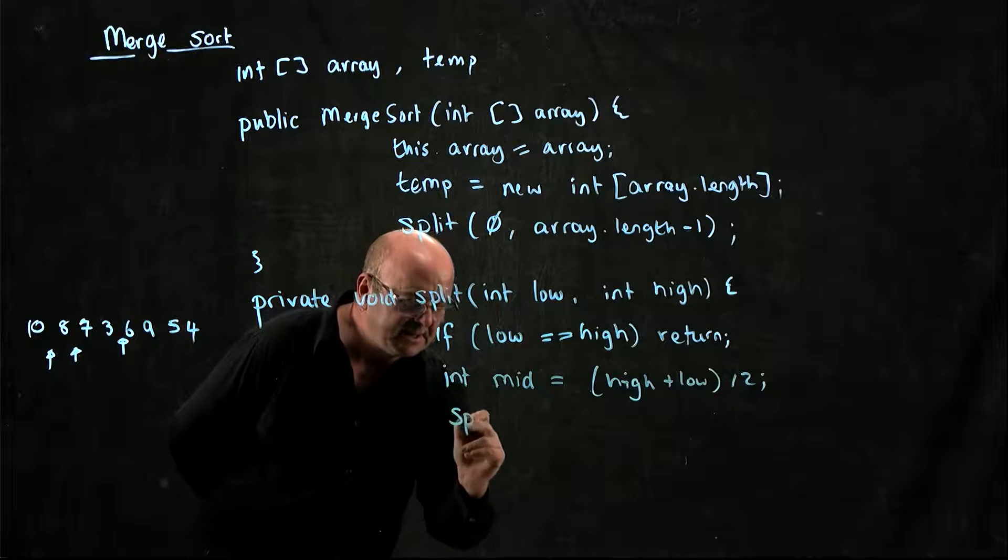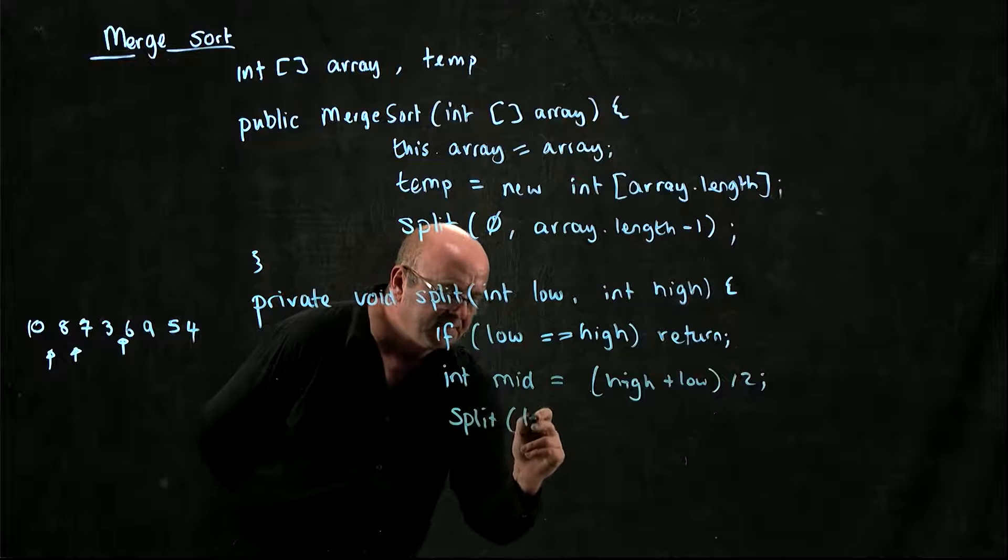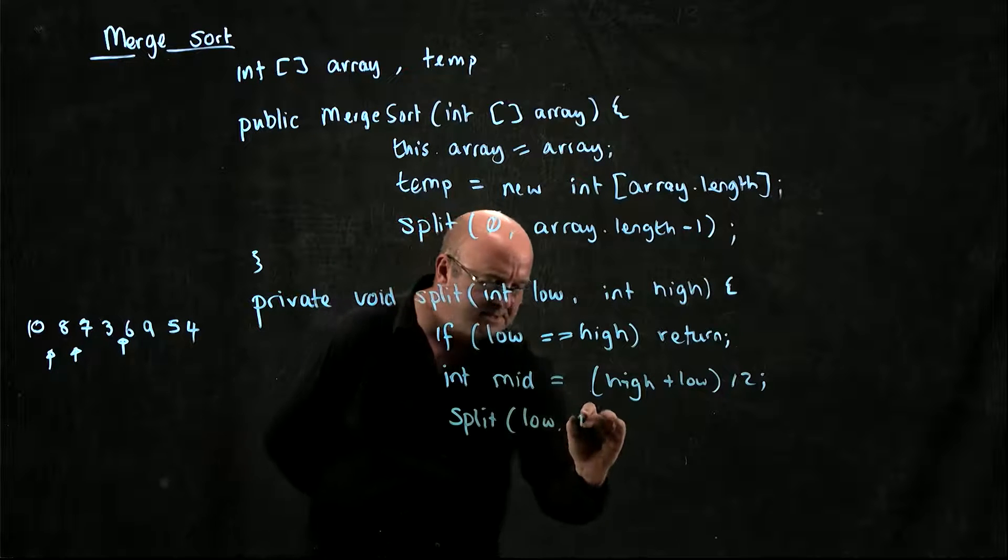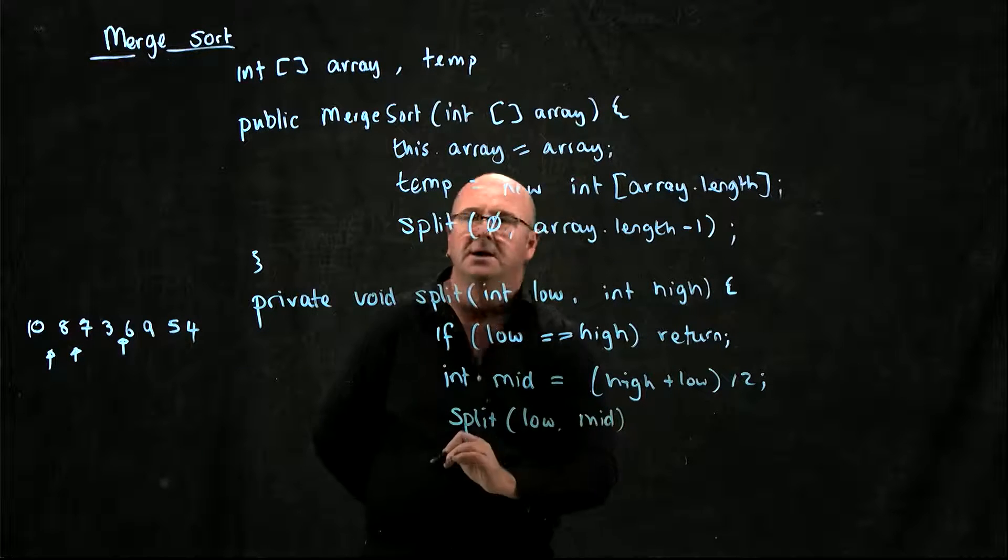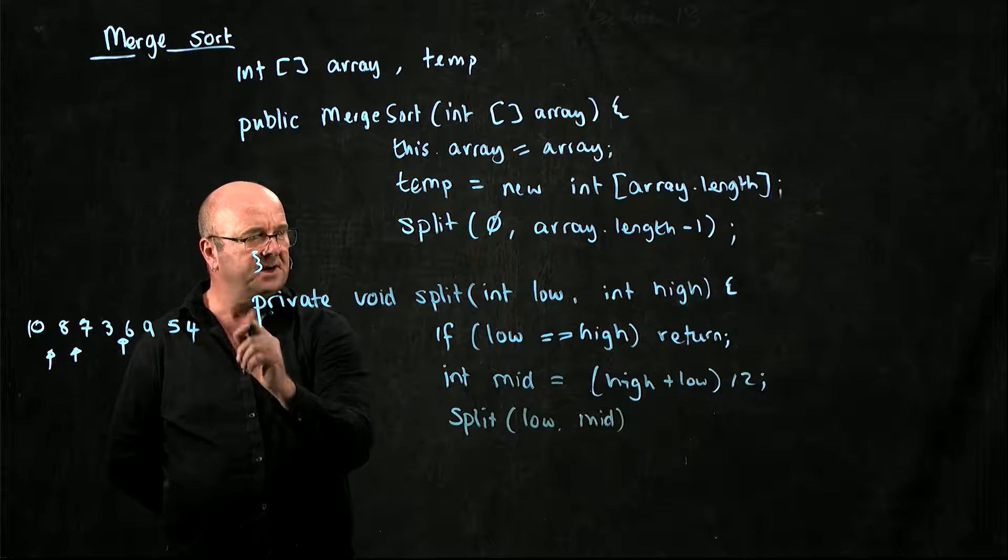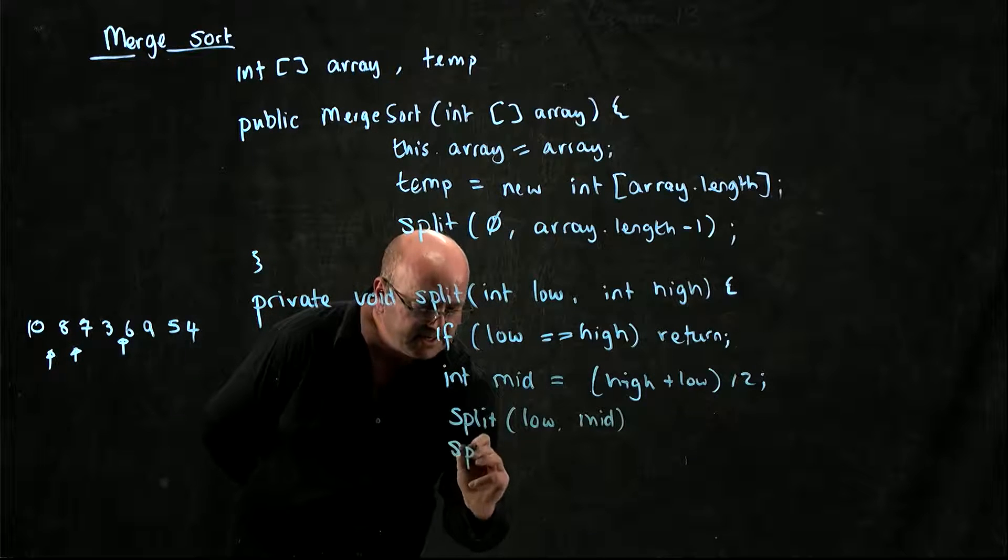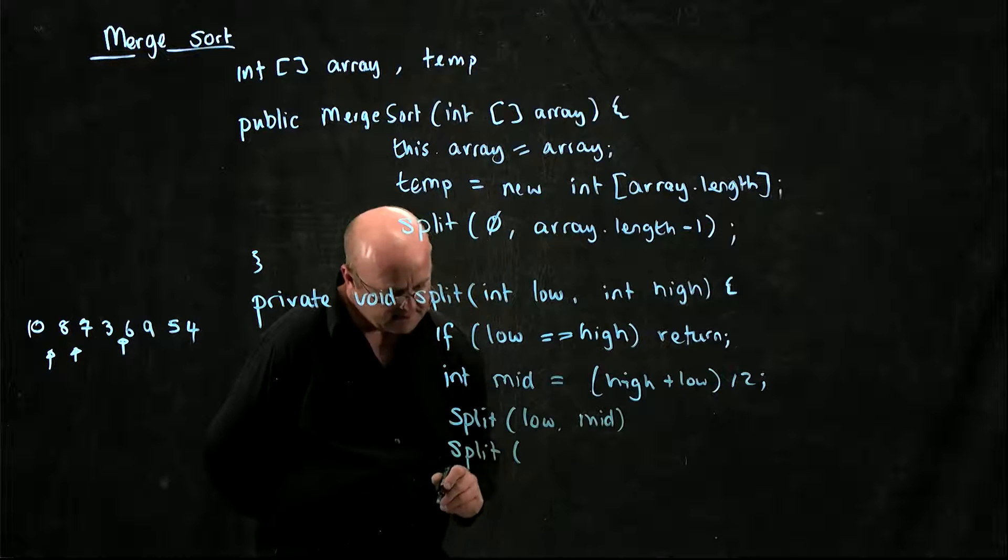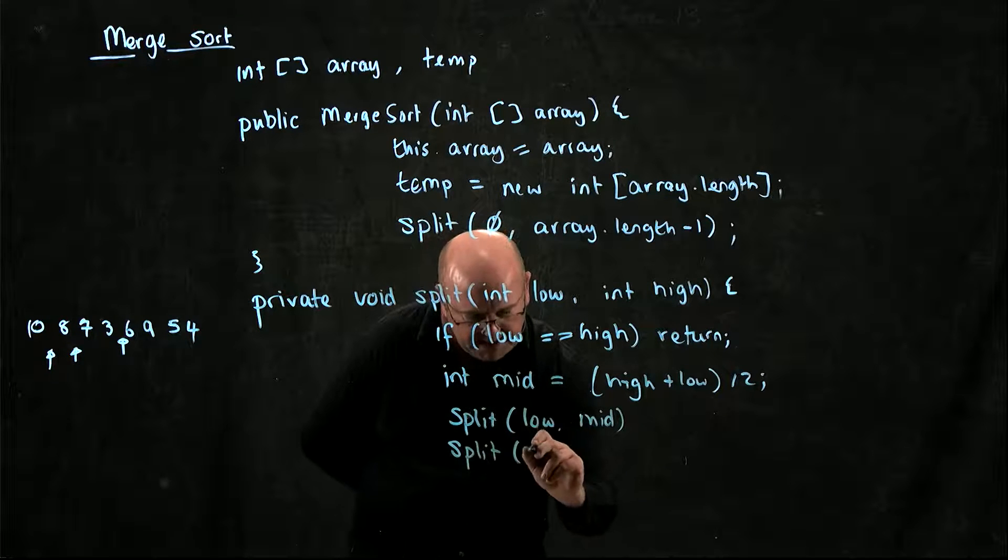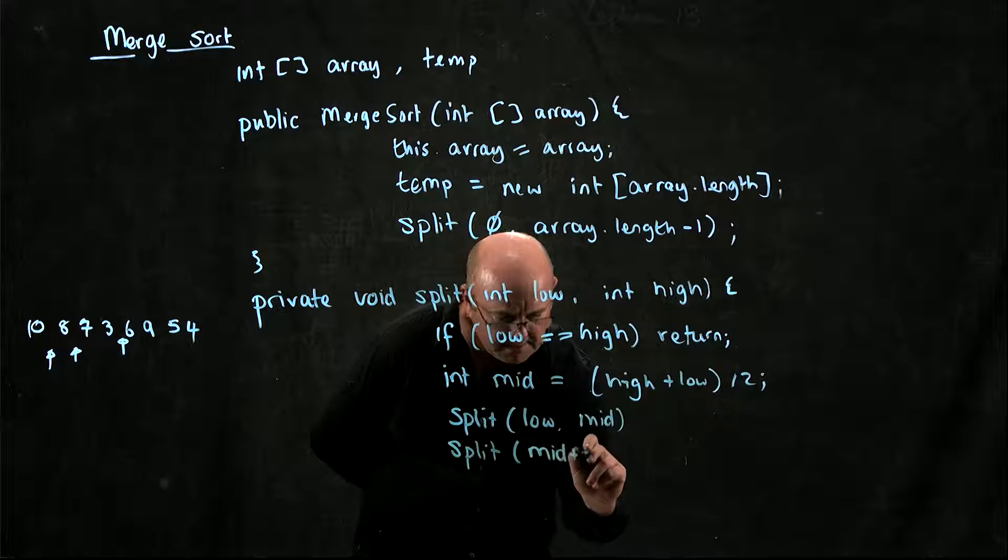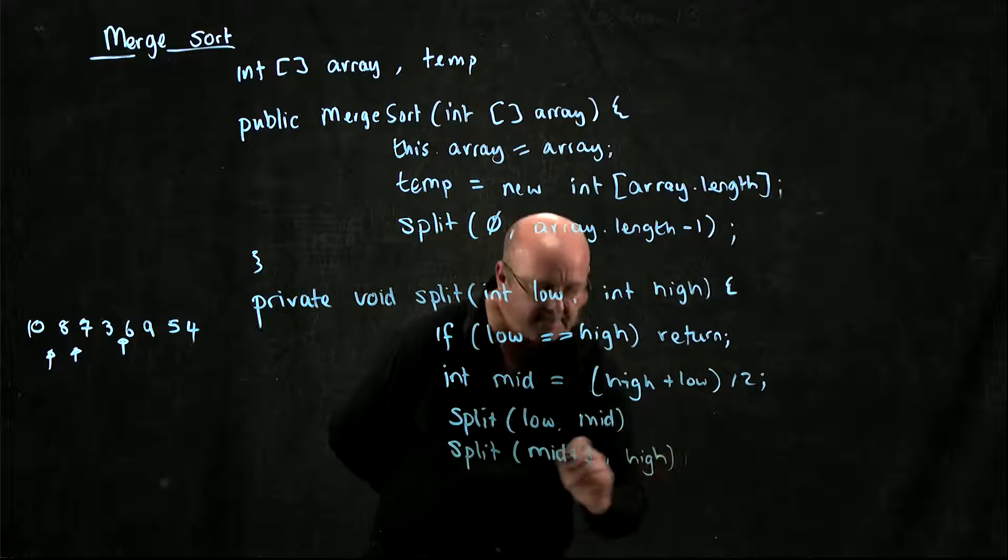So we're going to split from the low point to mid, but we don't want to use the same index twice, so we split from mid plus one to high.